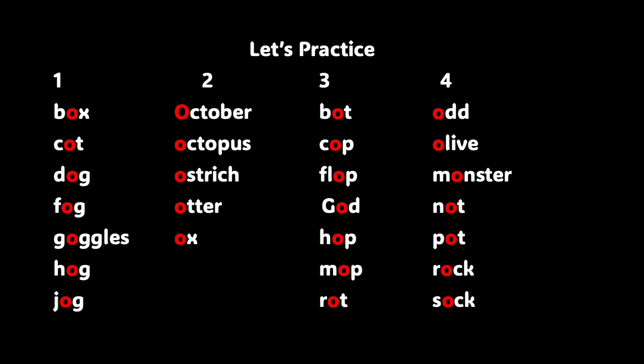Now, beautiful boys and girls, let's get some practice saying words with the short O sound. I will say a word and you simply repeat that word after me. Look at column one: box, cot, dog, fog, goggles, hog, and jog. Those words have the short O sound. Here are some words with the short O sound when the O is at the beginning of the word: October, octopus, ostrich, otter, and ox. Very good — they all have the short O sound.